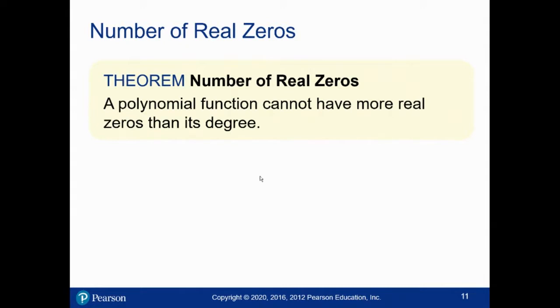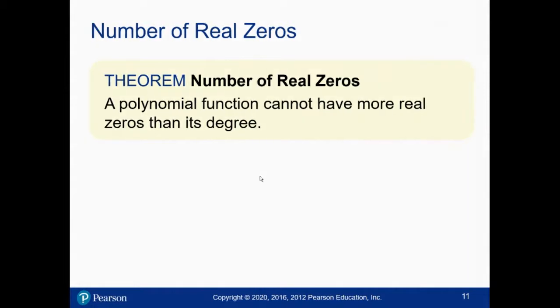If I have a polynomial, how many zeros can it have? It can't have more than its degree. So if I'm a degree 3 polynomial, I have at most three zeros. If I'm a degree 6 polynomial, at most six zeros. So degree n polynomial, at most n roots, including multiplicity.